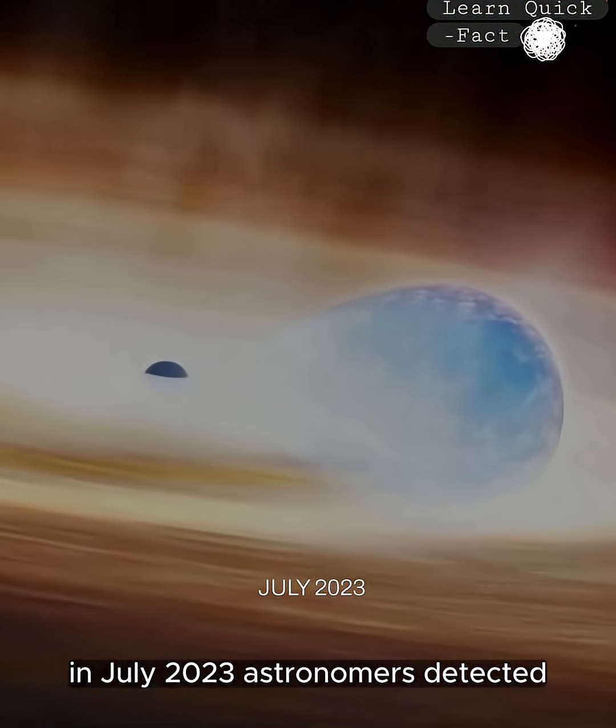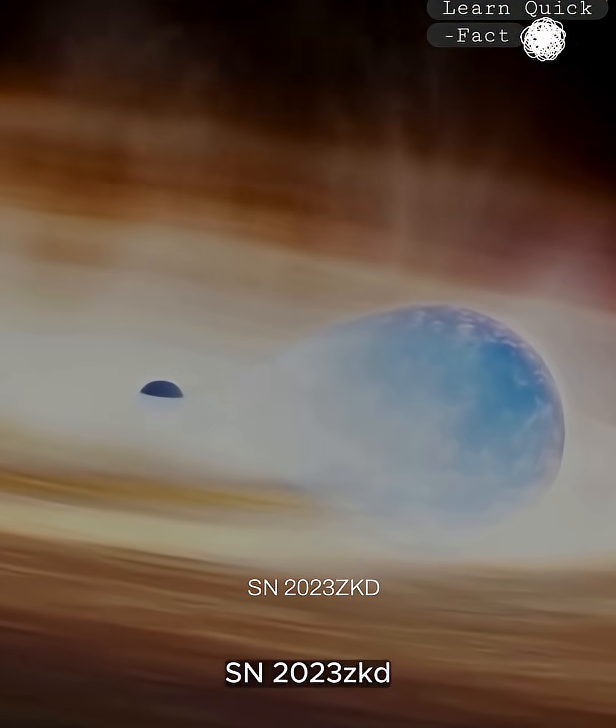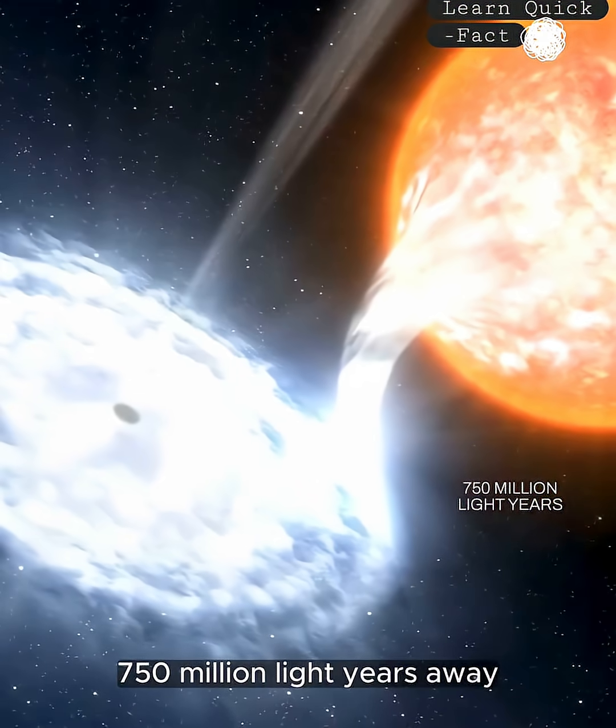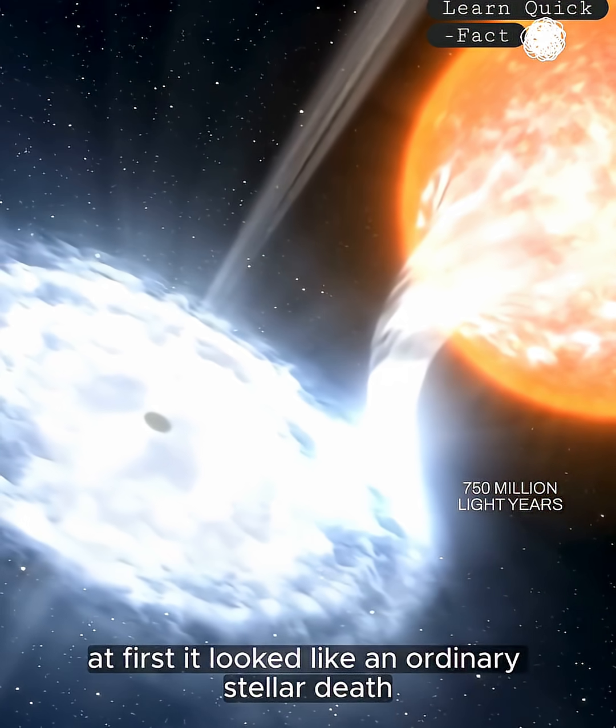In July 2023, astronomers detected SN 2023 ZKD, 750 million light years away. At first, it looked like an ordinary stellar death.